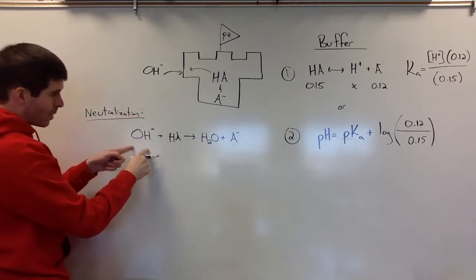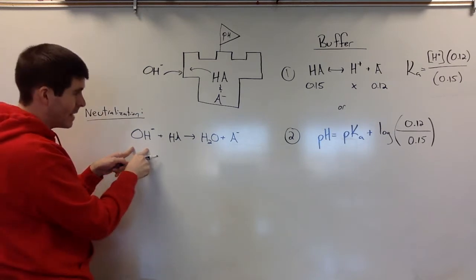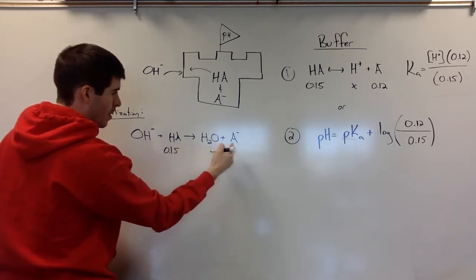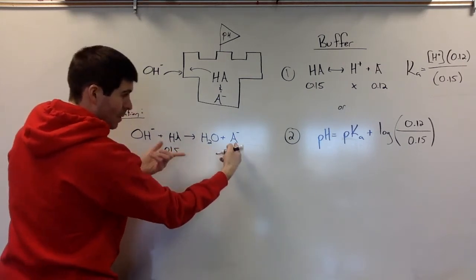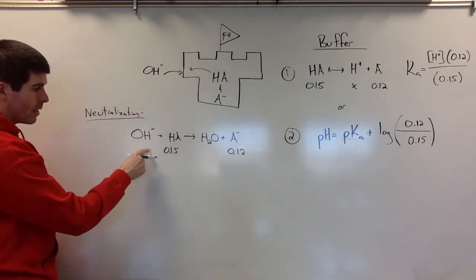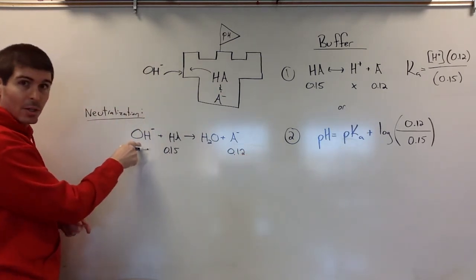And depending on what the molarity of the hydroxide is, say we have the acid was 0.15, the conjugate, we did have some to begin with, because it's in the buffers, 0.12. We know that this hydroxide here could go down.